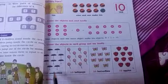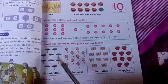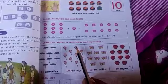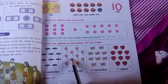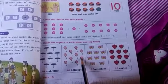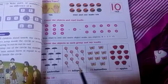Count the object in each group and say loudly. Write 1, 2, 3, 4, 5, 6, 7, 8, 9, 10. There are 10 lollipops.